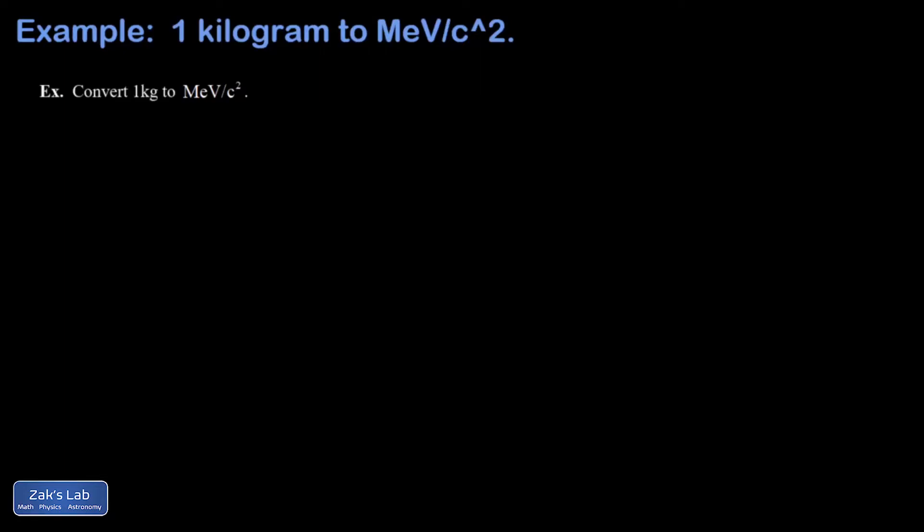In this video we're going to convert one kilogram into these strange new units: mega electron volts per c squared. These are very common to use when we're doing nuclear physics calculations. This comes from the famous equation E equals mc squared for the energy equivalence of a mass. We can also solve this for m and write m equals E over c squared, and we'll use both forms of the equation as we do this conversion.